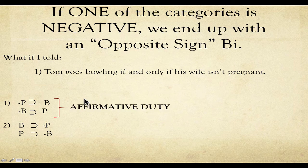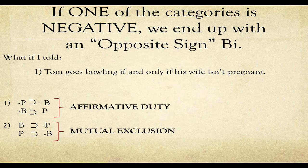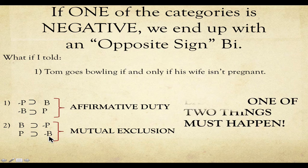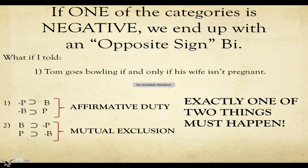That affirmative duty forces us to do something, and the mutual exclusion prevents us from doing both. You have to do one of these two things, but you cannot do both — because B excludes P and P excludes B. You must do exactly one of two things. You can't do both, and you can't do neither because of the affirmative duty. Hopefully that's starting to make a little more sense.